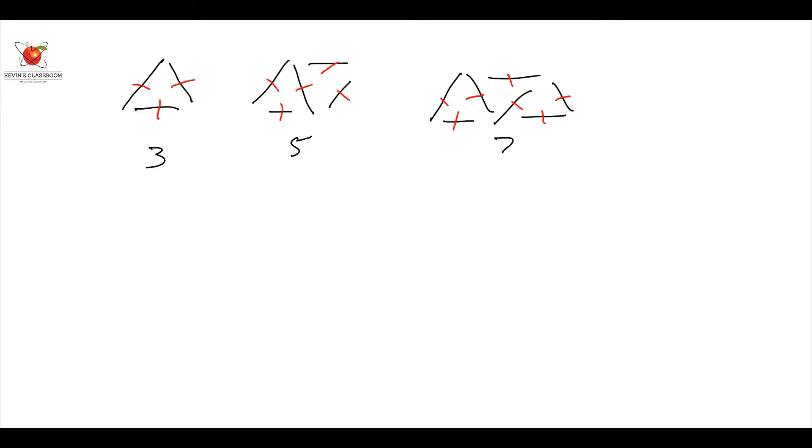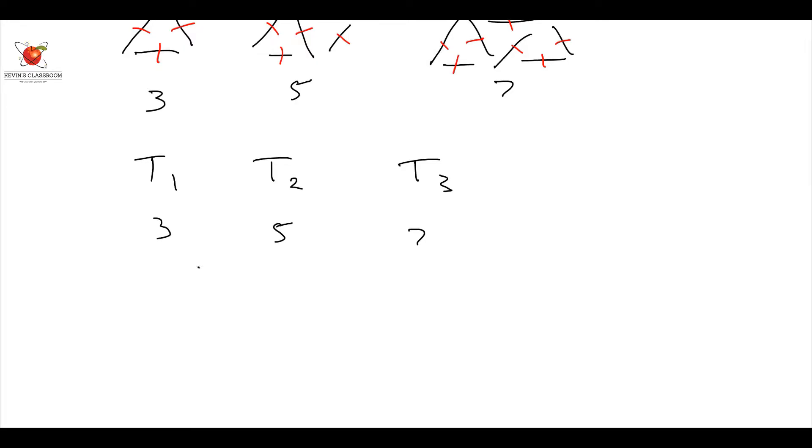The next one is you write it down as a number pattern, T1, T2 and T3, and there was three, five, and seven in each one. Always make it look like that. The next step with any number pattern is we look for the first difference, which is going to be T2 minus T1. The next one is going to be T3 minus T2, which is going to be seven minus five.